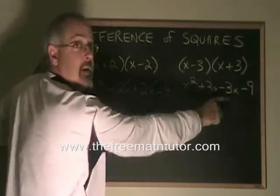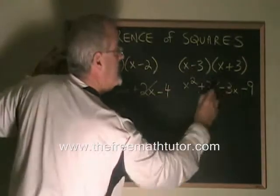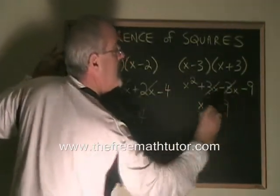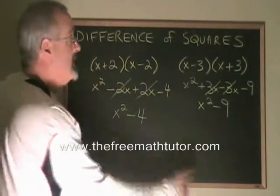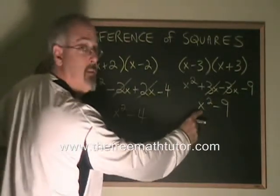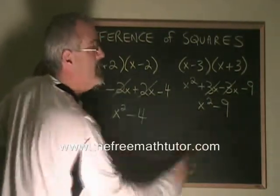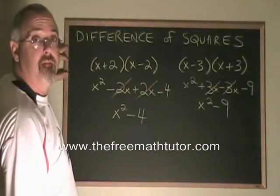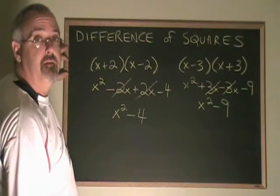The positive 3x and the minus 3x cancel, and we have x squared minus 9 as our product. It's a difference of squares. x squared is the square of x, 9 is the square of 3. It's a minus sign and that makes it a difference. This is the difference of squares.